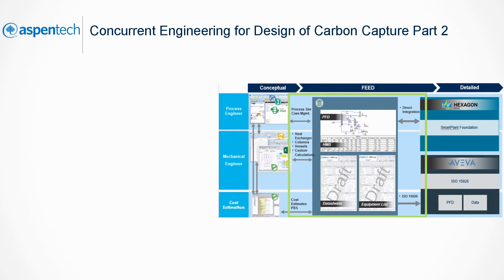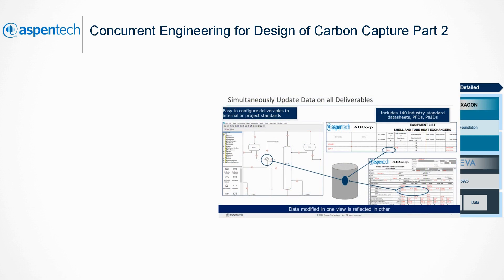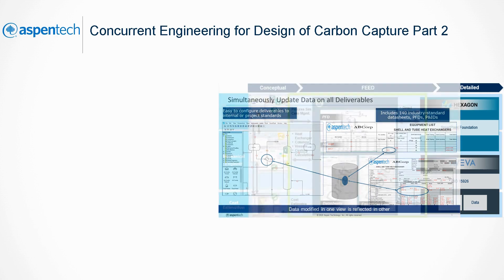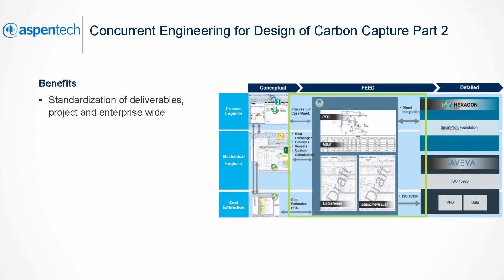Considering the challenges for EPC (Engineering, Procurement, and Construction) companies, it is quite significant to improve conceptual and FEED execution. Aspen Basic Engineering is a client-server application used to produce process or utility flow diagrams, equipment datasheets, and summaries. It has an object-oriented database to store processed data and allows immediate and consistent propagation of design changes. We can customize the database and standardize handovers, both project and enterprise-wide, and capture design rules and best engineering practices in templates for further reuse.